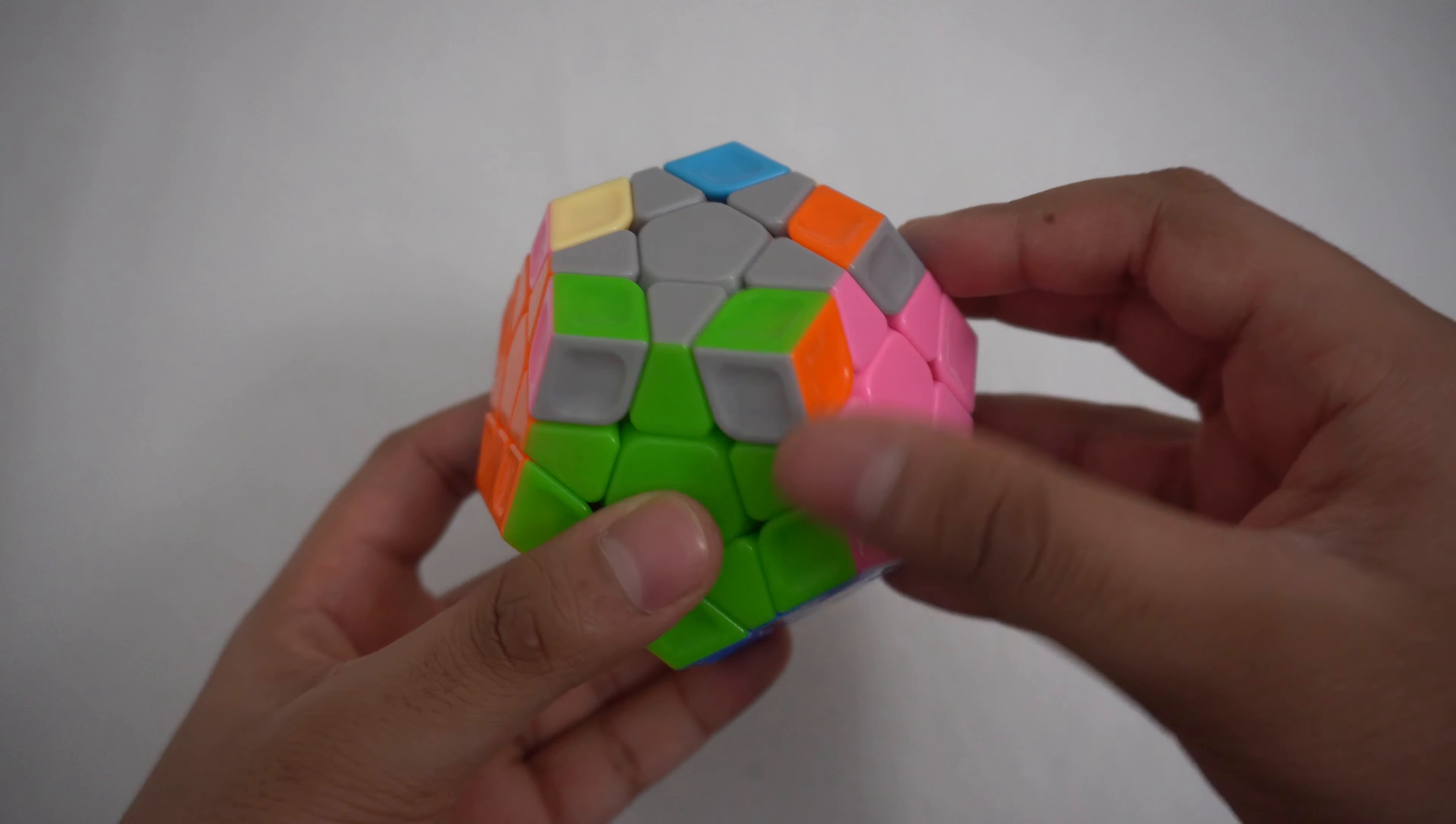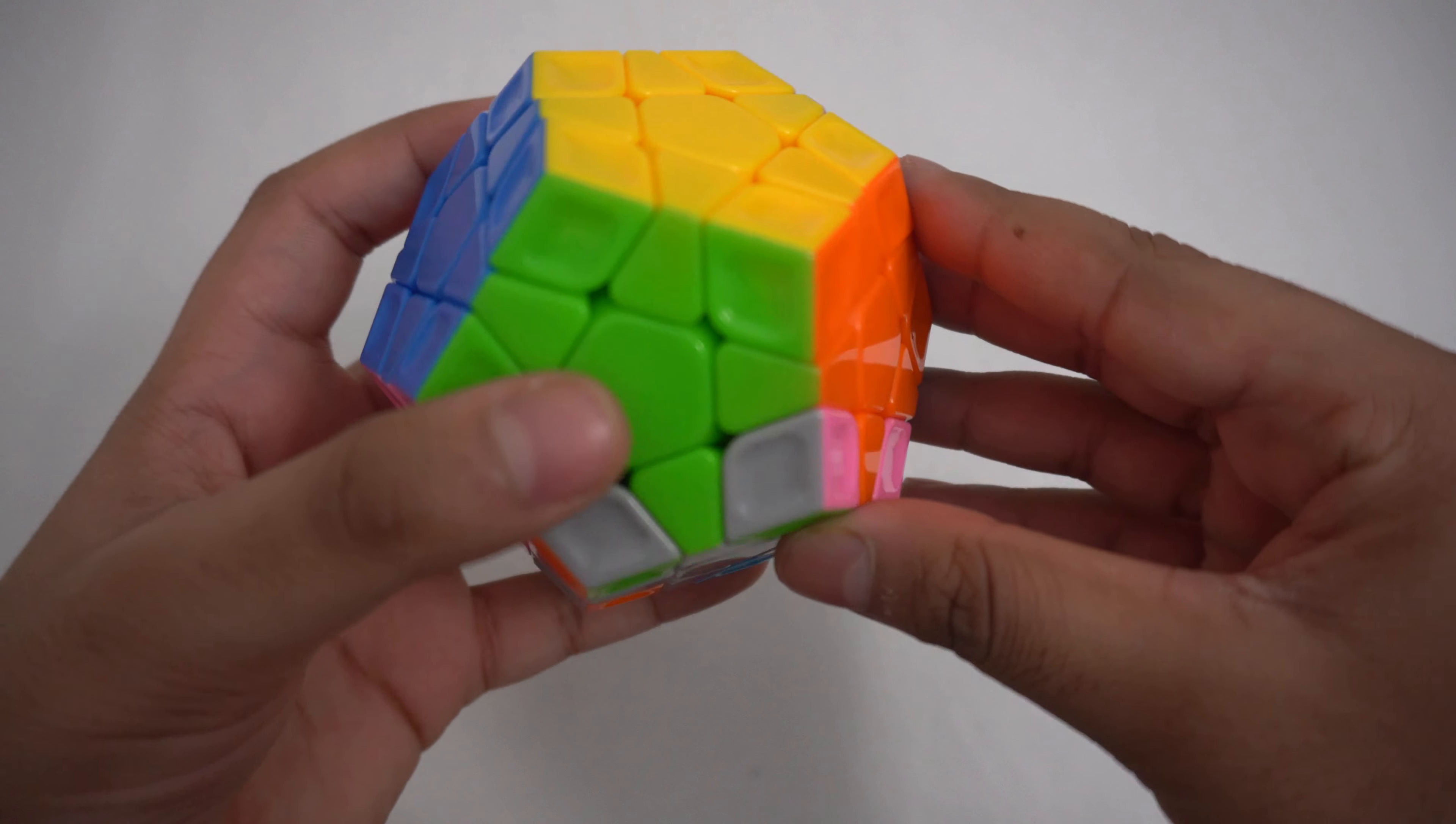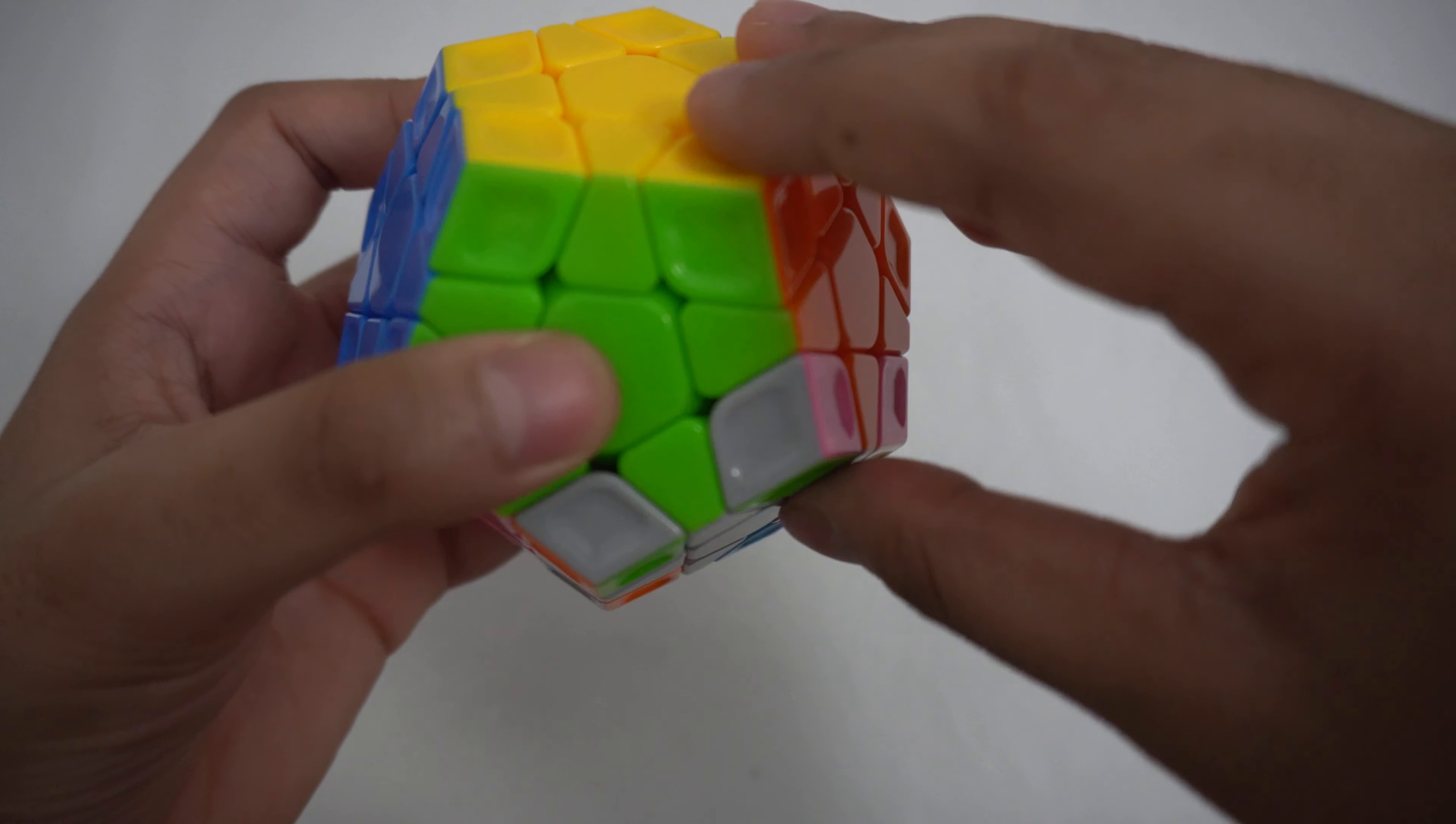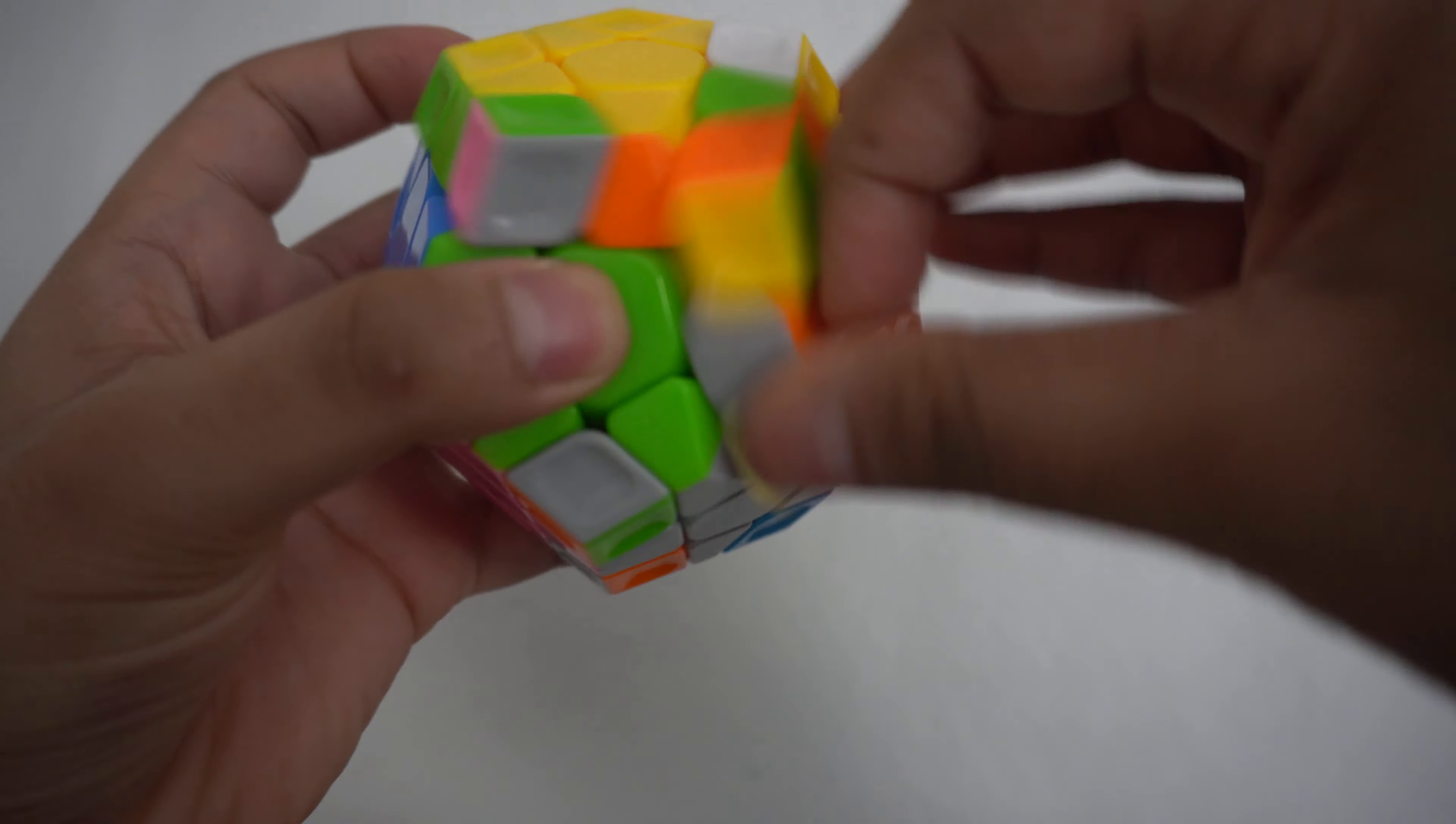Now we can move on to properly orienting the edges. Start by turning your Megaminx so that it's upside down. And after that, look for an edge piece that isn't oriented correctly. Put the unsolved edge piece on the bottom right and then do R U R prime, U R prime until the gray side is on the bottom.